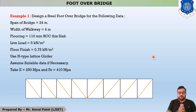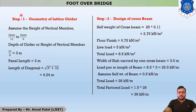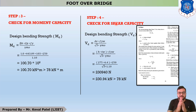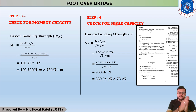In the first five lectures we discussed steps one through nine. Step one is geometry of lattice girder. Step two is design of cross beam — the cross beam is a supported beam at the bottom chord support. Step three is check for moment capacity, where you select a section such that the maximum shear force and bending moment on the cross beam are within safe limits. Step four is check for shear capacity.